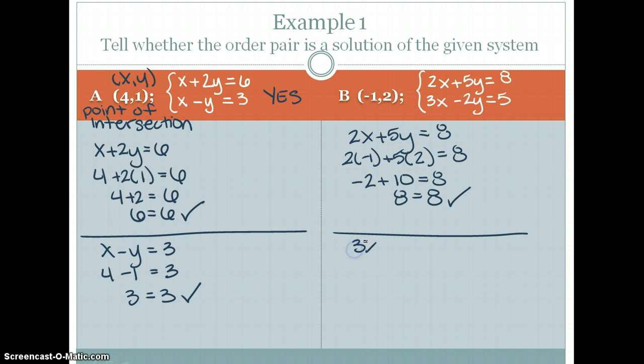Plug it into the second. 3x minus 2y is equal to 5. So 3 times negative 1 minus 2 times 2 is equal to 5. That's negative 3 minus 4 is equal to 5. Negative 7 does not equal 5. So it does not work for the second.